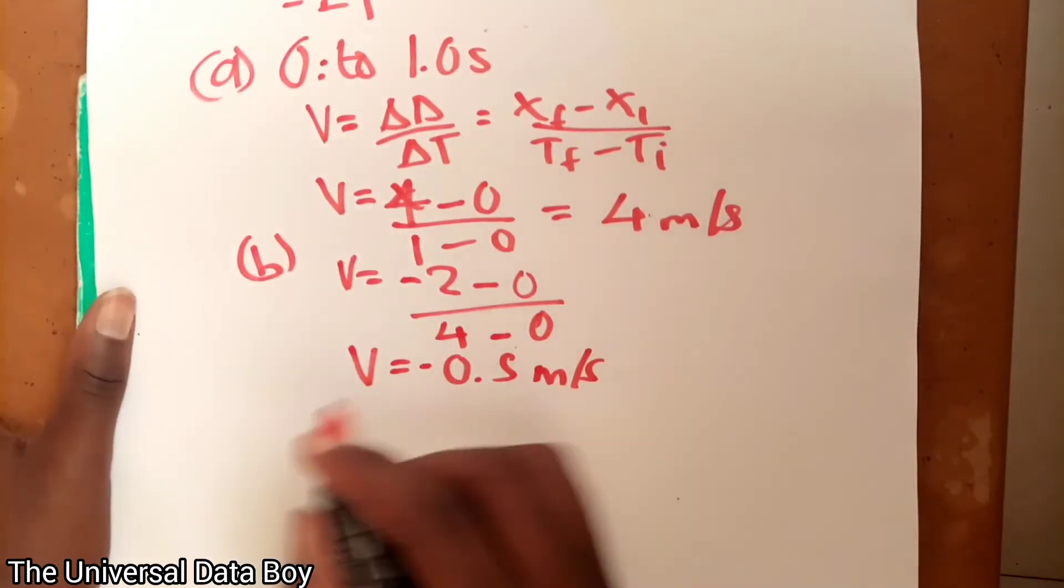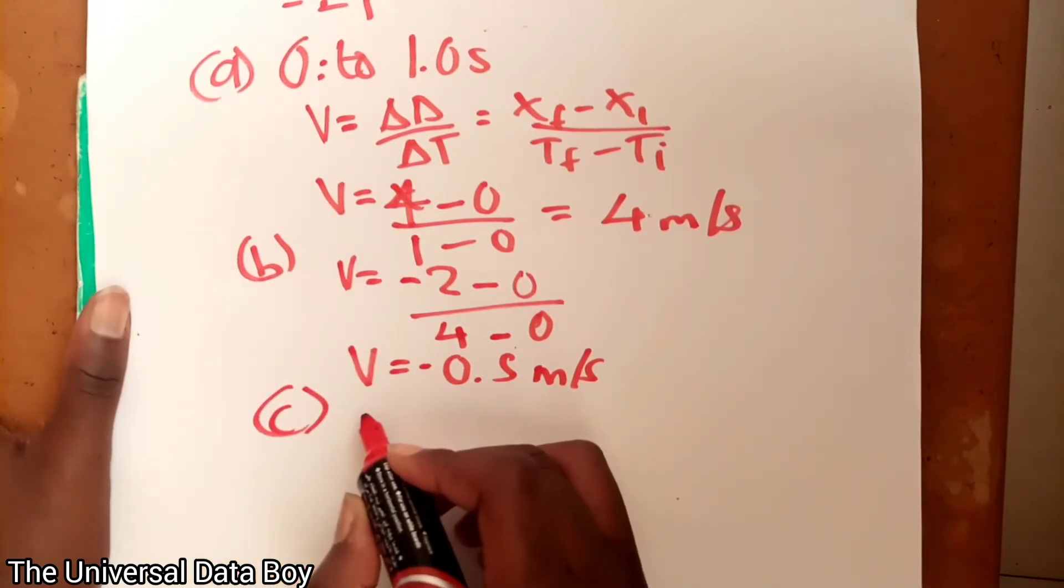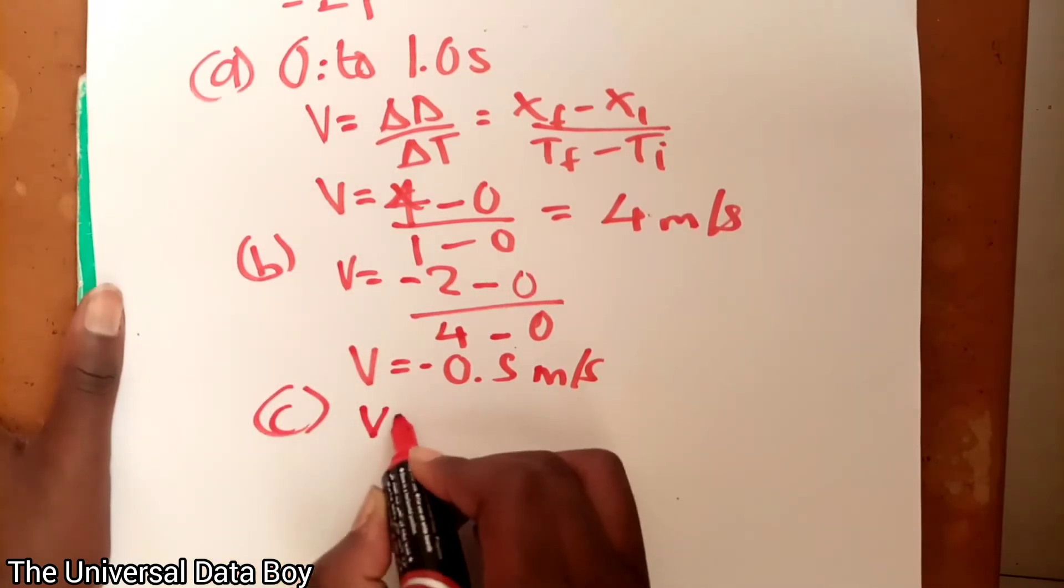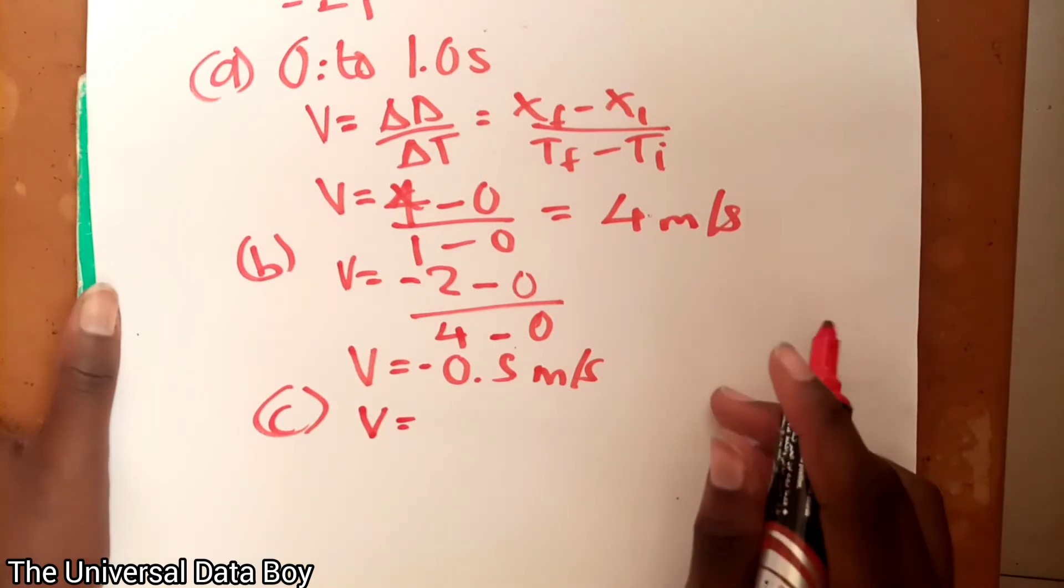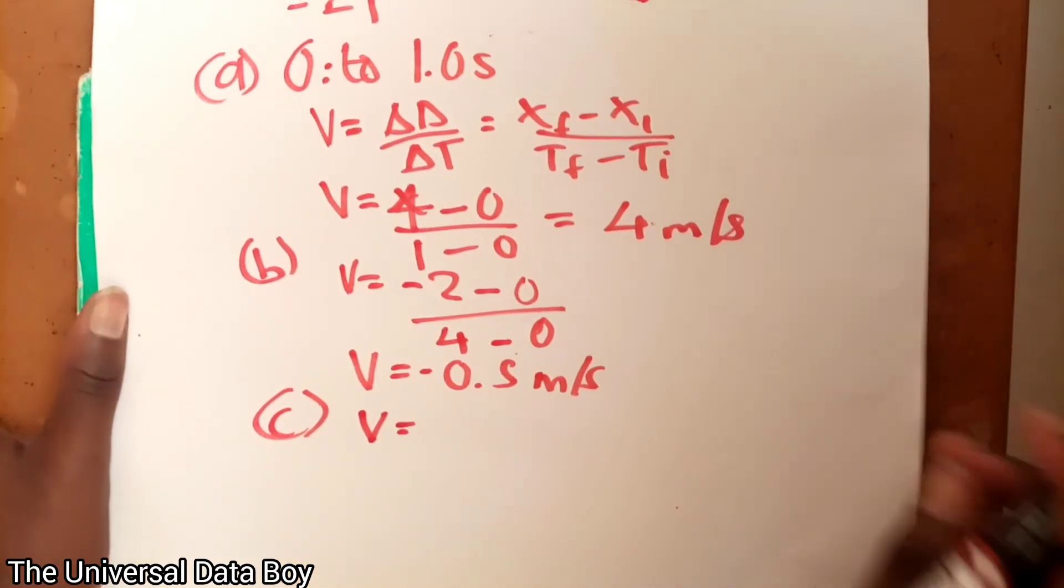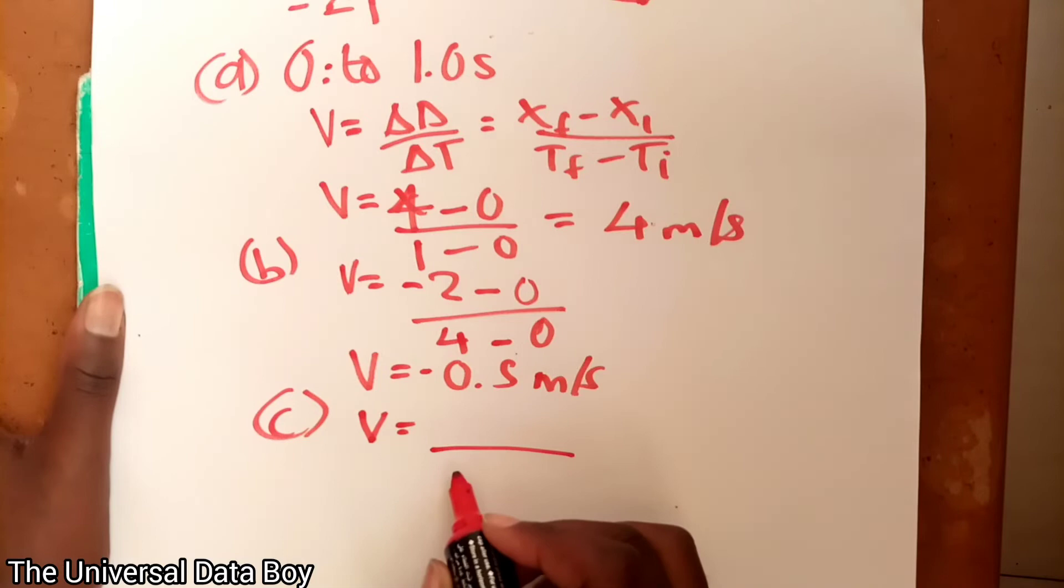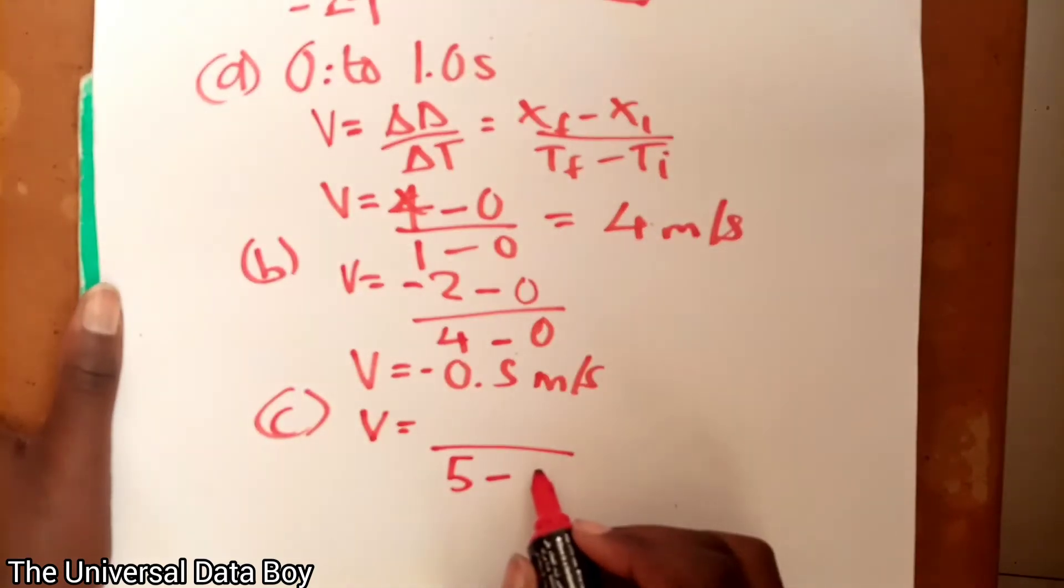Then we go to c. And c, we are going to use the same formula. And c we are going from 1 to 5 seconds. So we definitely know that our final time is 5, our initial is 1